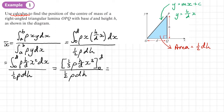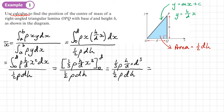Integrating the top gives (1/3) rho H/D times x³, evaluated between zero and D, all over half rho D H. Substituting D gives (1/3) rho H/D times D³. After cancelling: one-third divided by one-half is two-thirds; rho cancels; H cancels; and D² over D simplifies to D. So x-bar equals two-thirds D.